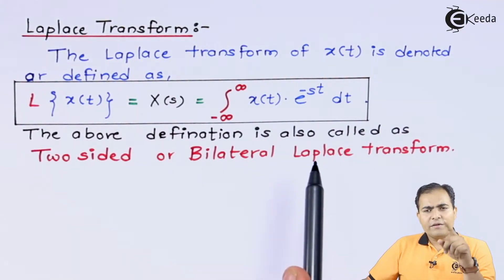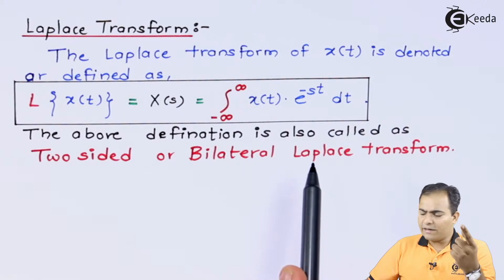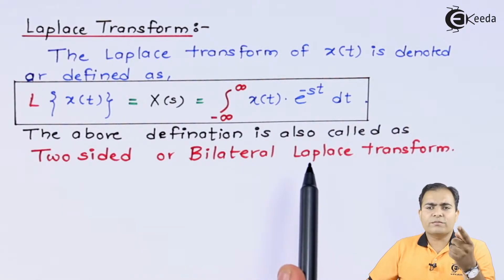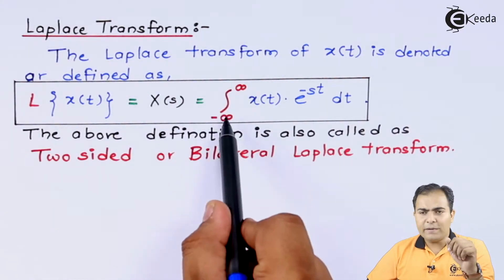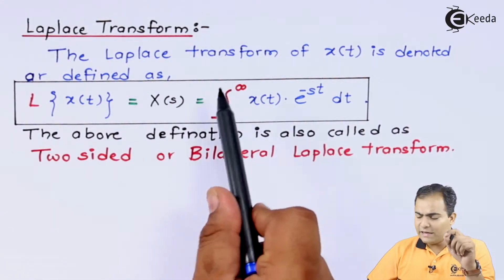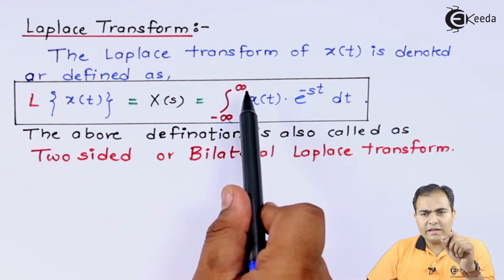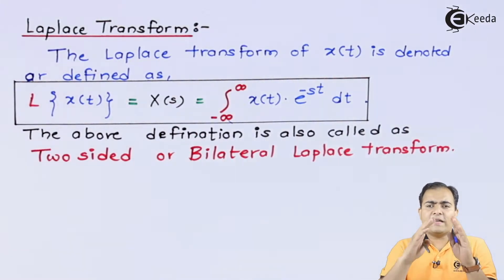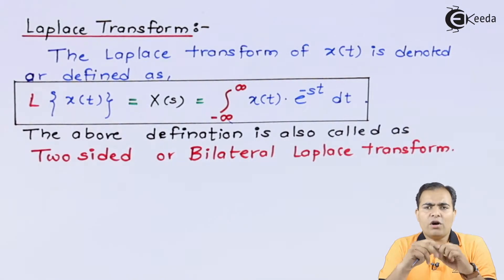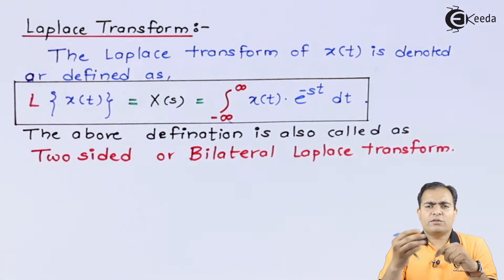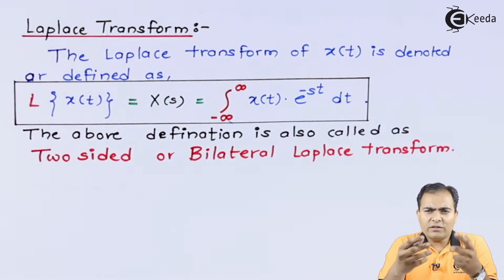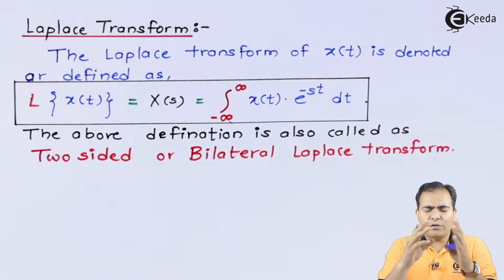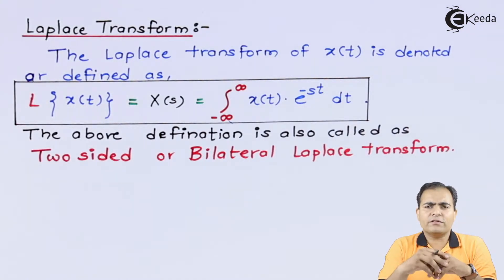Similarly, we can also calculate the unilateral Laplace Transform by simply replacing the integration limits from 0 to infinity. For that, you need to consider the given function is causal, or having a time period which is greater than or equal to 0. Let us see how the definition changes to the unilateral Laplace Transform.